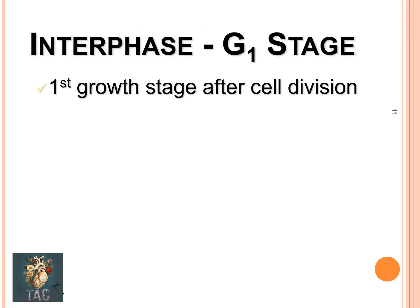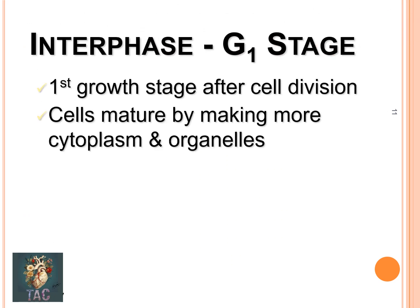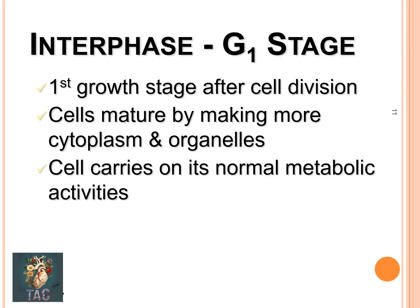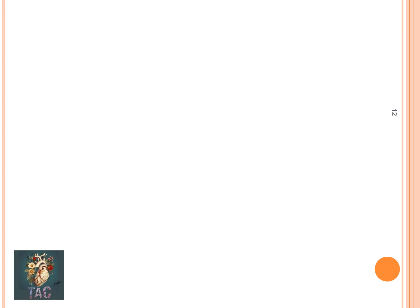Interphase: the G1 phase is the first growth phase after cell division. The cells mature by making more cytoplasm and organelles, and the cell carries on its normal metabolic activities.